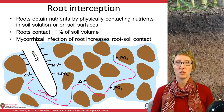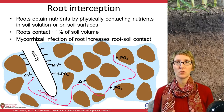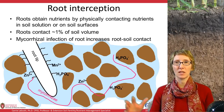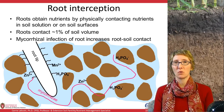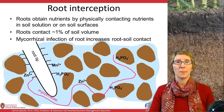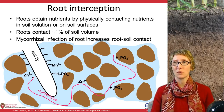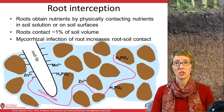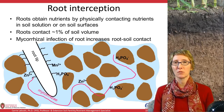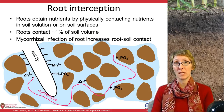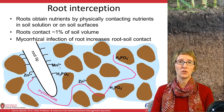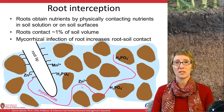Our third mechanism is root interception, where roots need to physically contact the nutrient in order to take it up — it won't move by mass flow or diffusion very much, only in very small amounts. What's important here is that roots generally can be thought to only explore about one percent of the soil volume, which is not very much. So if a plant has to rely on root interception to take up a nutrient, they're not exploring much soil, making it harder for the plant to get that nutrient. Many of our micronutrients like manganese and zinc rely on root interception, as does phosphate.